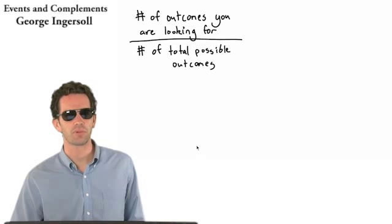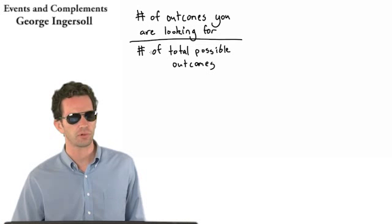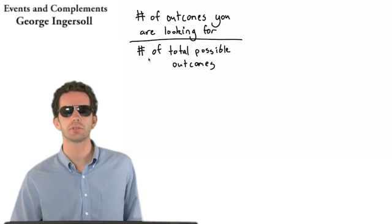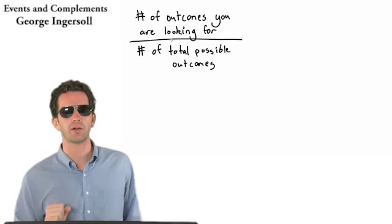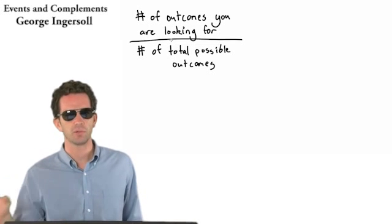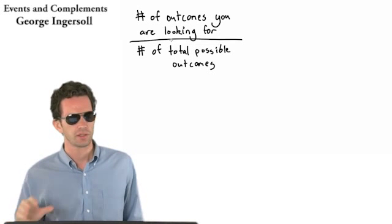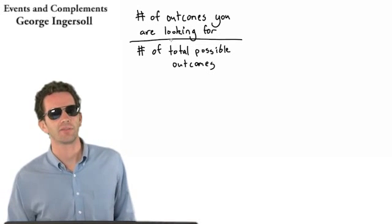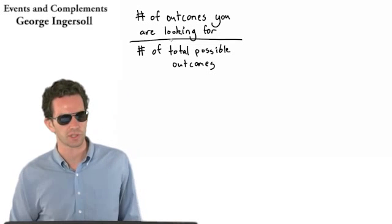All right, so in the last video, Fundamentals of Probability, we took a look at this equation here: number of outcomes you're looking for over number of total possible outcomes. This can be used any time the likelihood of any specific outcome is equal to the likelihood of all other outcomes occurring. This can be used a whole lot. It'll get you out of a lot of jams in probability, so remember this equation.